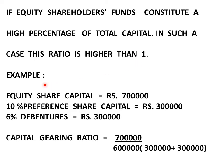Now I am going to give an example which will make the concept of capital gearing ratio very clear to you. Equity share capital is equal to Rs. 7,00,000; 10% preference share capital is equal to Rs. 3,00,000; 6% debentures is equal to Rs. 3,00,000.